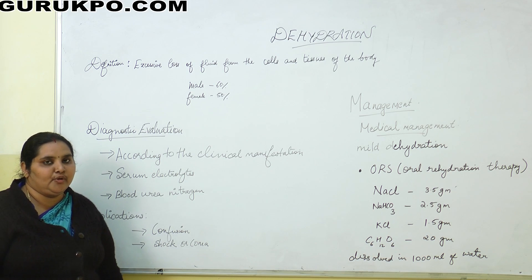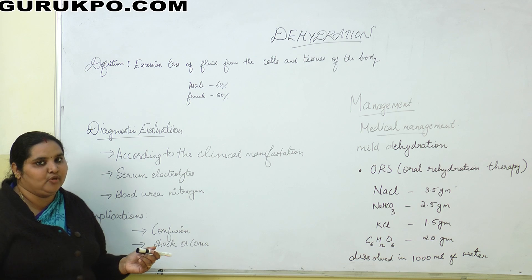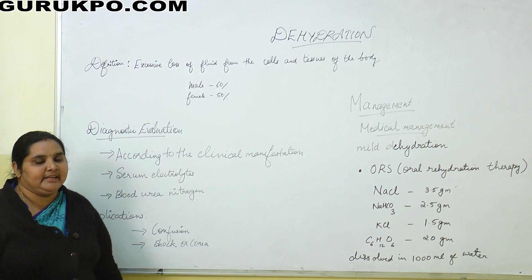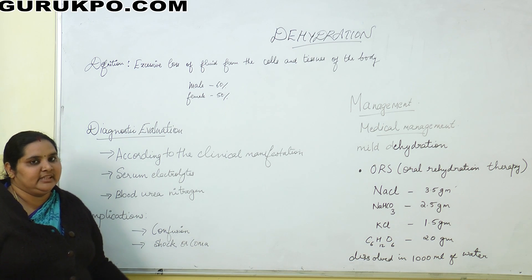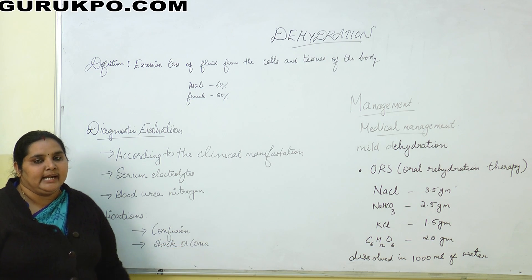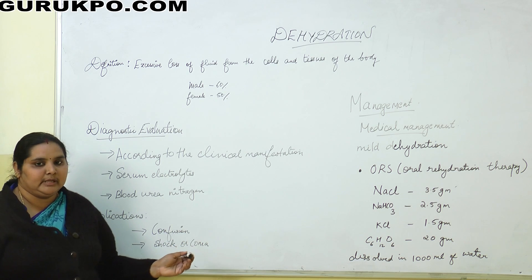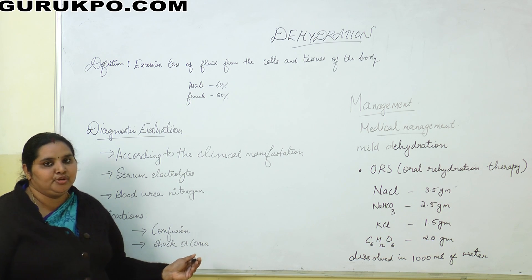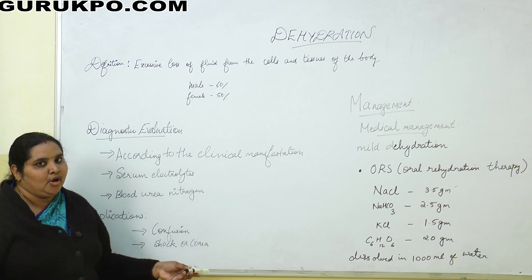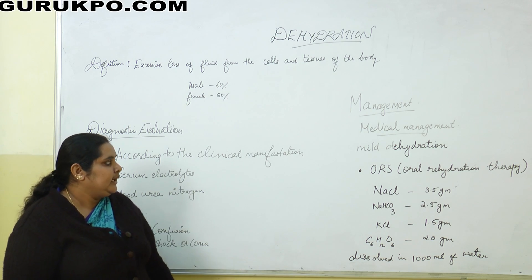Complications: first is confusion — the person is disoriented, unable to grasp information or express themselves clearly. Next is shock or coma — in diabetic patients with hyperglycemia and increased urinary output, when adequate fluid is not received and blood sugar is elevated, the person may go into shock. If untreated, this can be fatal and lead to coma or hypovolemic shock.